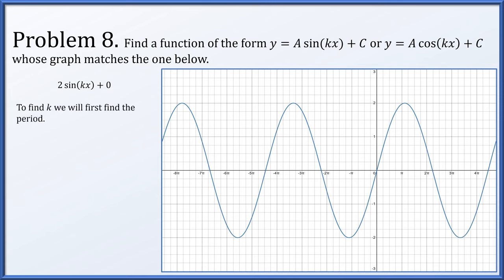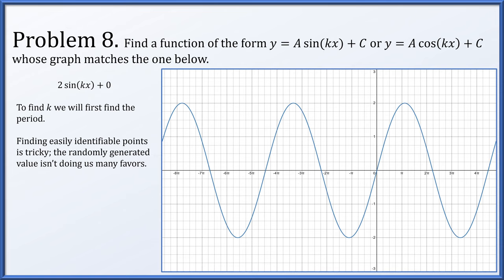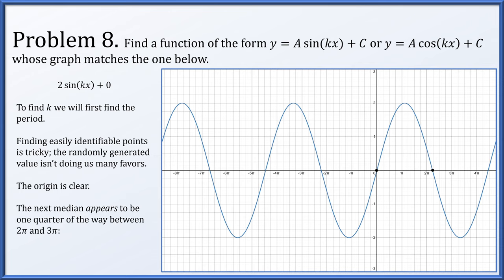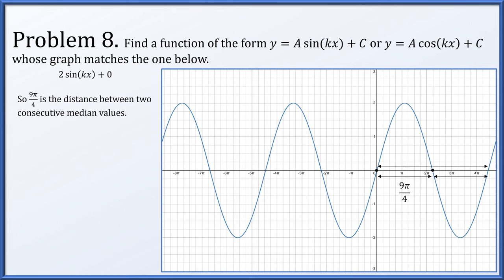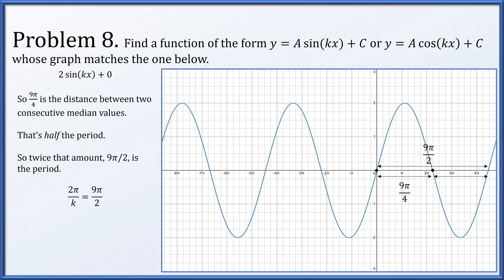k is related to the period, so let's find the period. Finding easily identifiable points is tricky on this randomly generated graph. The origin is straightforward. The next obvious point is a median crossing at about a quarter of the way between 2π and 3π, which is 9π/4. That distance of 9π/4 from the origin is half the period, so the full period is 9π/2. Therefore 2π/k = 9π/2, and solving for k gives us 4/9. So y = 2·sin(4/9·x).